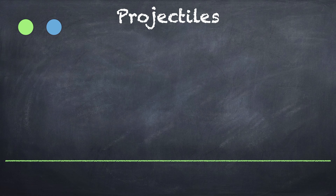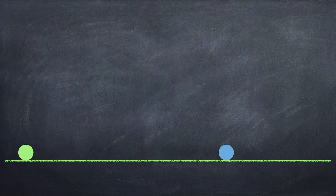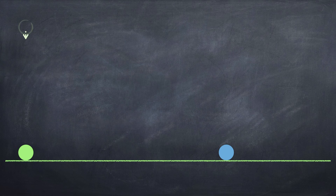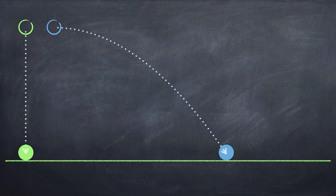I'll start off with something you've maybe seen in class. In this demonstration, a piece of equipment drops a ball bearing straight down, and at the same time a second ball bearing is projected horizontally. This dotted line shows the path of the ball bearing that falls vertically downwards, and this dotted line shows the path of the ball bearing that's projected horizontally. The important thing to note is that both ball bearings take the same time to fall to the ground.